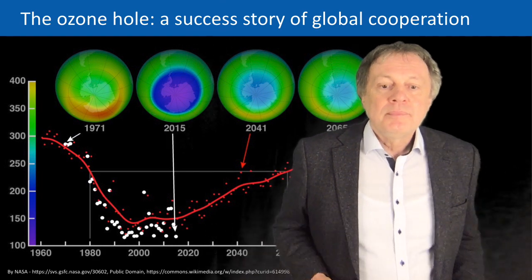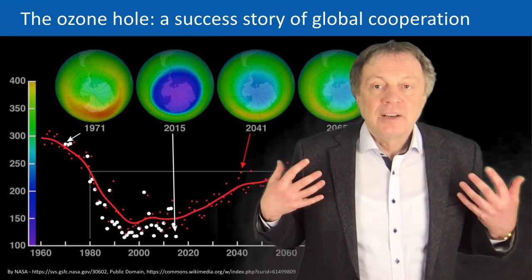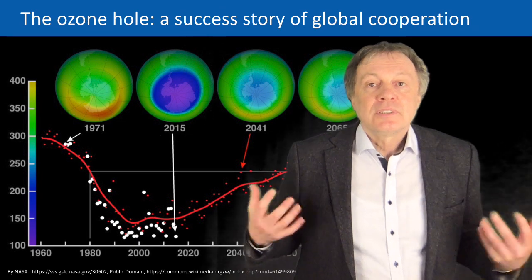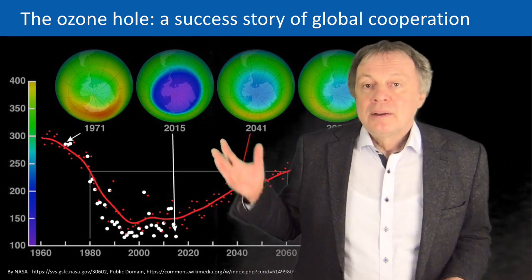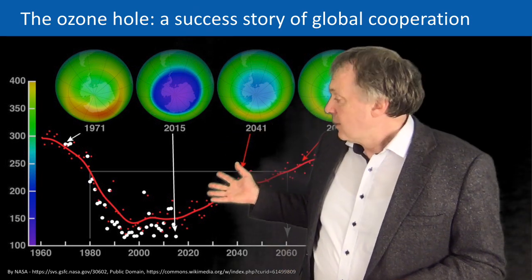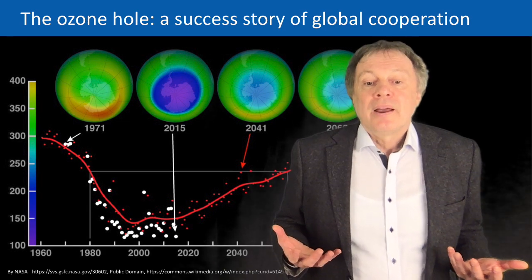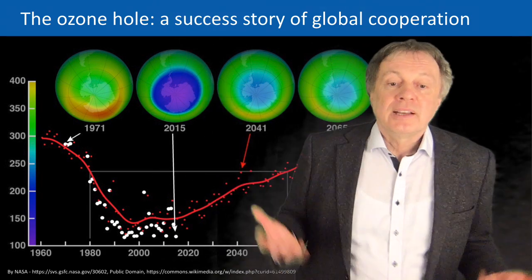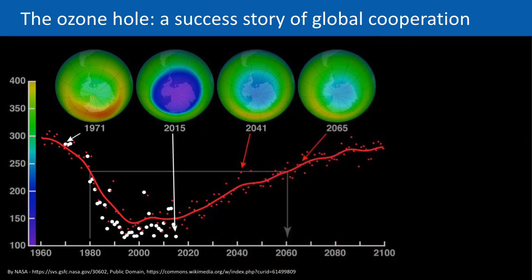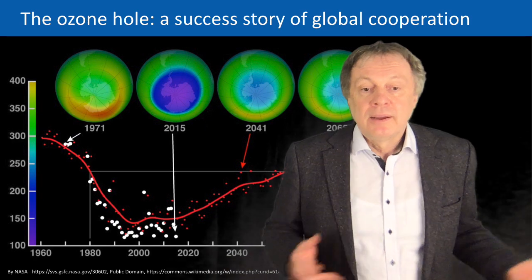At some point people tried to do something against it, and they found a worldwide agreement that certain chemicals are not allowed to be put into the atmosphere anymore. That was the so-called ban on CFCs done in Montreal — the Montreal Protocol in 1987. Due to this ban, the concentration of these dangerous chlorofluorocarbons has been reduced since then, and the curve going down is not as steep anymore. Since about 1990 it's recovering, and slowly the concentration is going up again, so that in about 50 to 100 years we will have a similarly strong ozone layer as before.